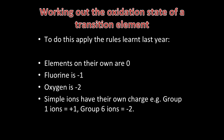To work out the oxidation state of a transition element in a compound or a complex ion, you just need to follow the rules that you learnt last year. Elements on their own have an oxidation state of 0. Fluorine in a compound has an oxidation state of minus 1, and oxygen in a compound has an oxidation state of minus 2. All group 1 ions have an oxidation state of plus 1, all group 2 ions plus 2, all group 6 ions minus 2, all group 7 ions minus 1, etc.